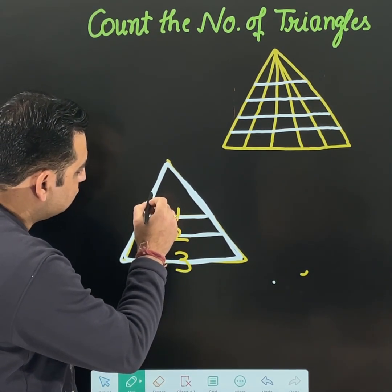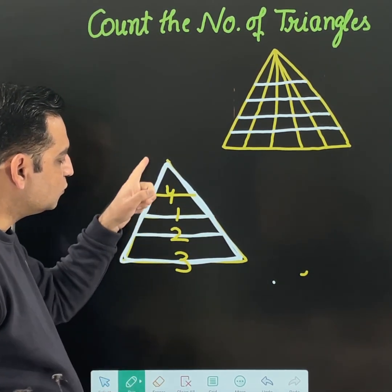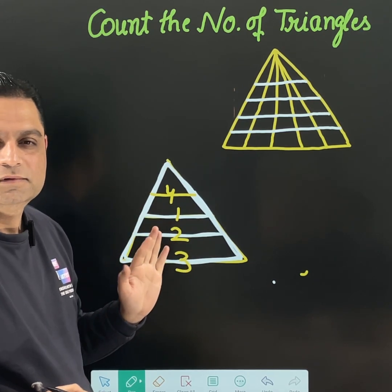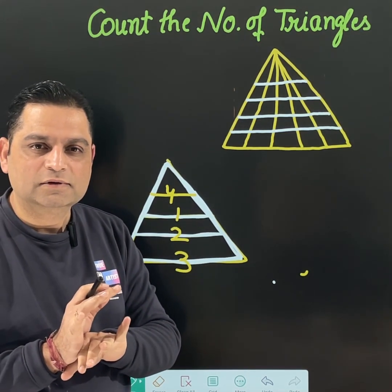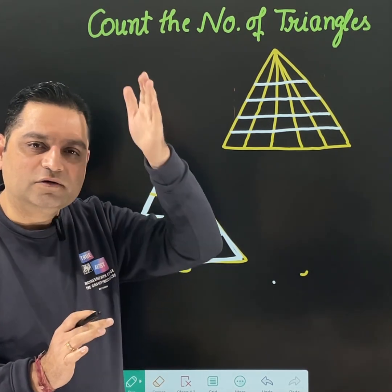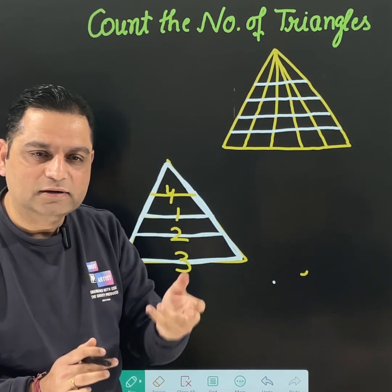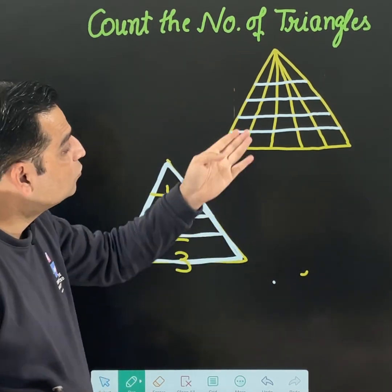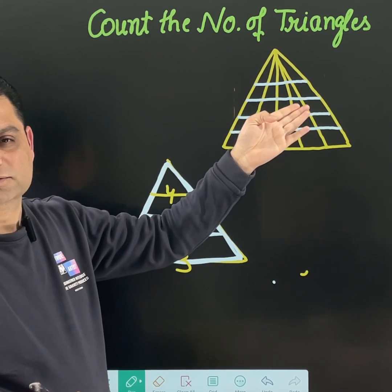If there is one more line, the total number of triangles becomes four. So two tricks are done: lines coming from top to bottom — the vertical way — and the horizontal way. Now the main diagram is a combination of both, so how do we calculate there?